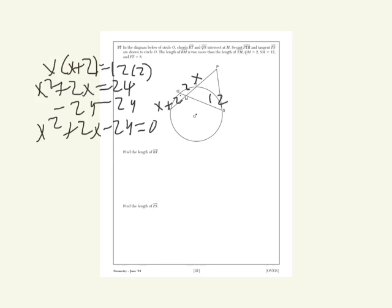Now, you need to find two factors of negative 24 that are going to add up to positive 2, and those factors are 6 and negative 4. So, you set it up as X plus 6 times X minus 4 equals 0.